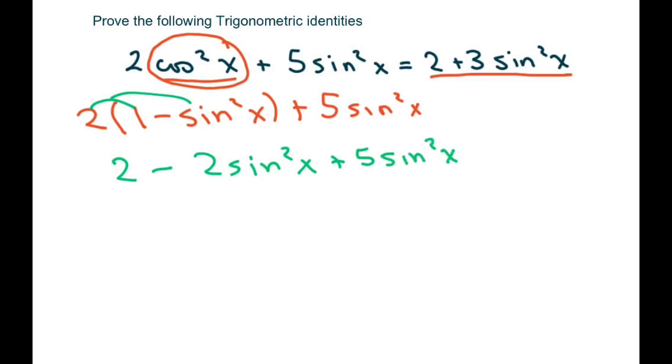These are like terms. We have five sine squared minus two sine squared, which is three of them, which equals our right side of the equation.